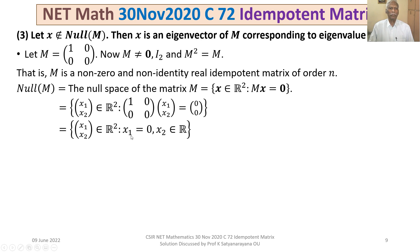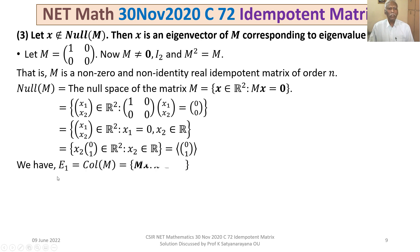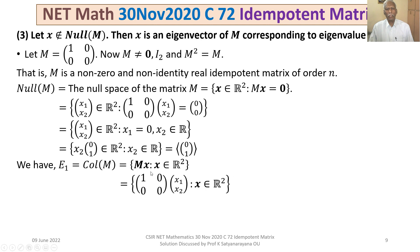The null space of M is the subspace spanned by (0,1)ᵀ. The column space of M is the set of all Mx for x ∈ ℝ², which gives x₁·(1,0)ᵀ for arbitrary x₁, so it is spanned by (1,0)ᵀ. Hence null(M) = E₀ is spanned by (0,1)ᵀ, and E₁ is spanned by (1,0)ᵀ.